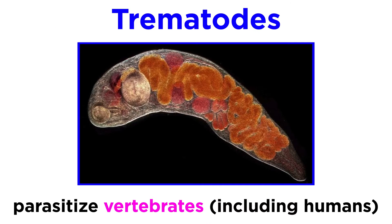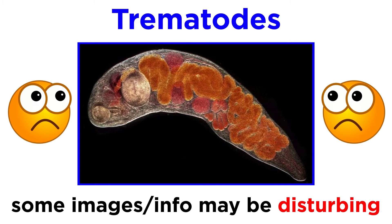Nearly all adult Trematodes parasitize vertebrates, including humans. Though we've discussed parasites in this series before, these are the first human parasites we have encountered. As a warning, some of the images we will be looking at are a bit graphic, and the information might be disturbing to some viewers.